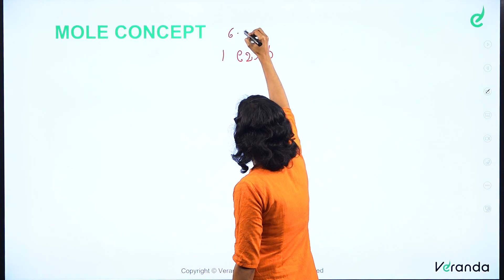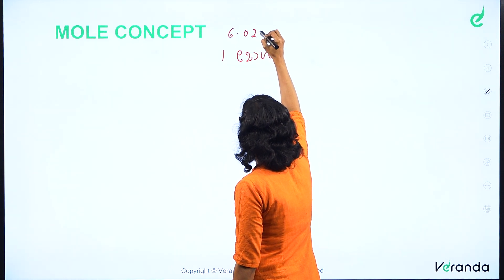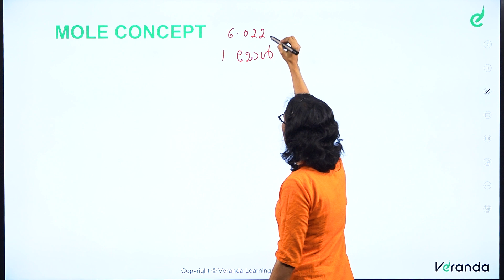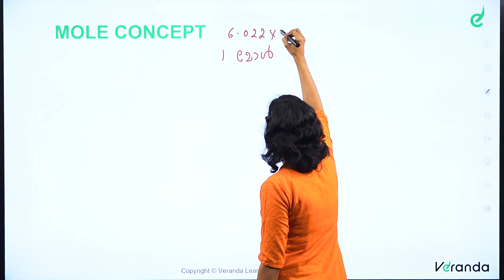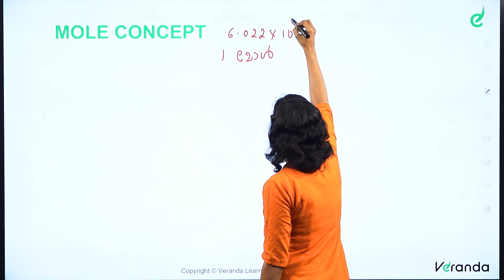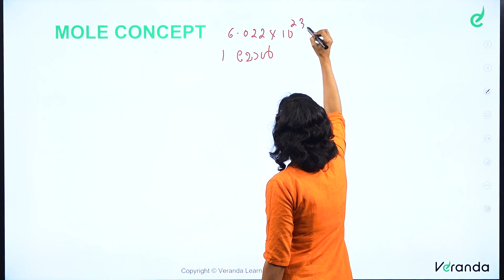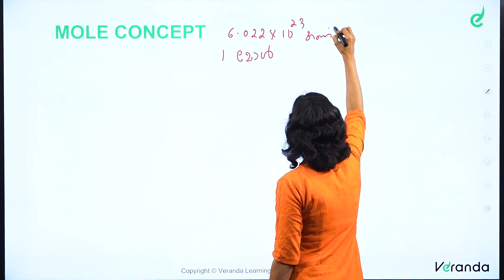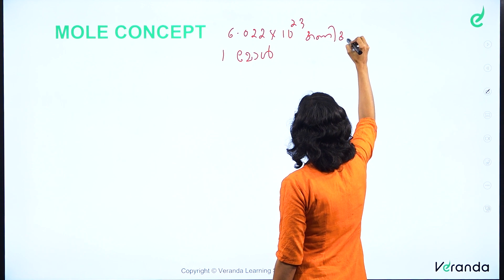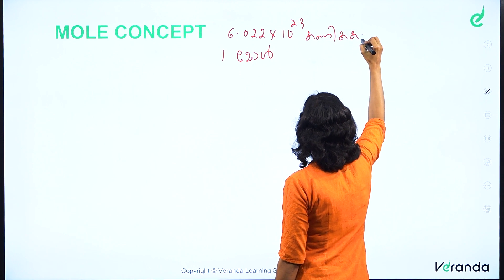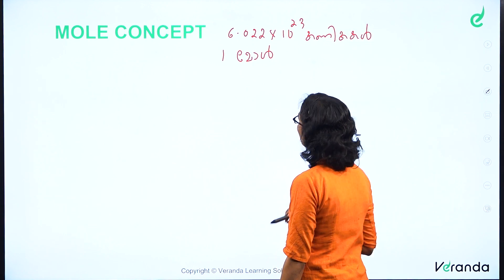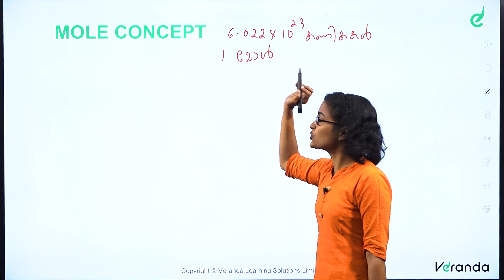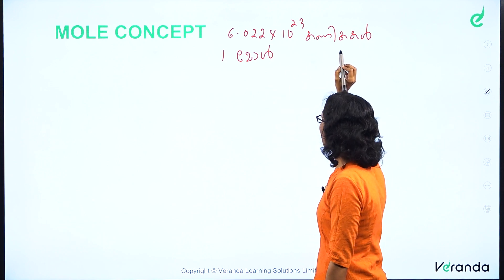Avogadro's number — you will get it as 6.022 × 10 raised to 23. That is Avogadro's number: 6.022 × 10²³.